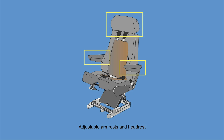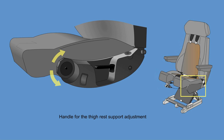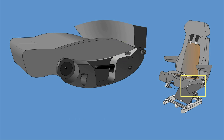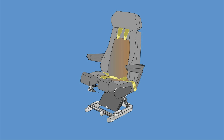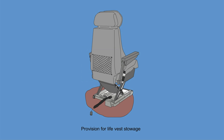Adjustable armrests and headrest are provided with mechanical operation. A handle for thigh rest support adjustment with mechanical operation is also included. A push-button actuator for lumbar support actuates a foam bag with air, allowing many different adjustments. There is a handle for harness inertial device manual locking. A restraint system is attached to the seat structure — the safety belts are a five-point harness with a one-point quick-release buckle. An inertia reel is provided for the torso restraint system, and provision is made for life vest stowage on the seat back, with an optional fire glove for emergency equipment support.